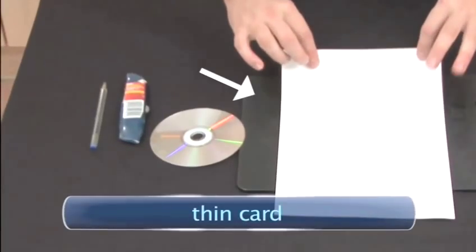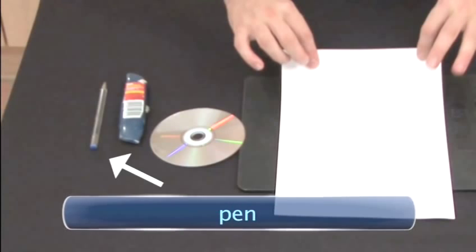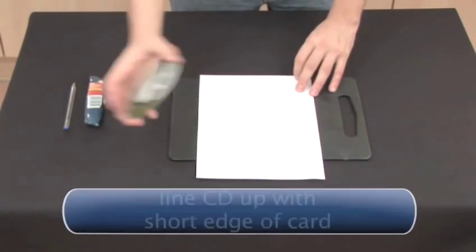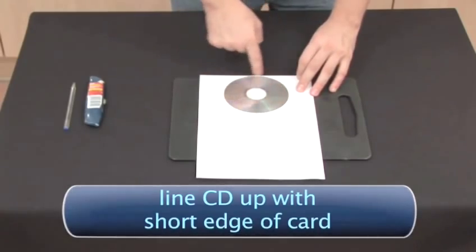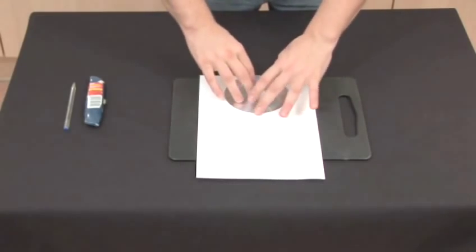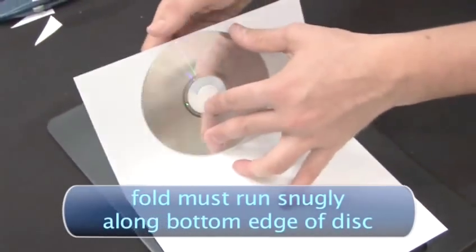You will need thin card, a craft knife and a pen. Line your CD up with the short edge of the card, making sure it is central and fold it over neatly so that the fold runs snugly along the bottom edge of the disc.